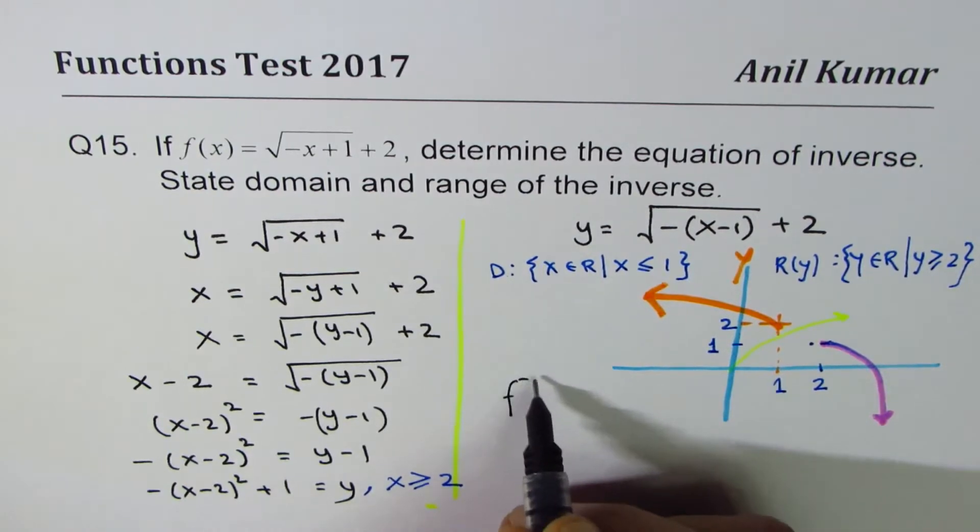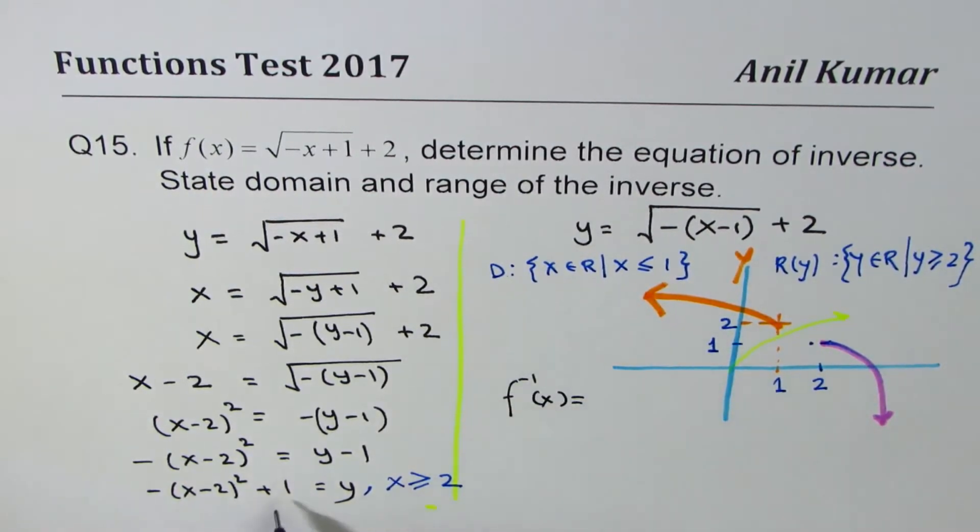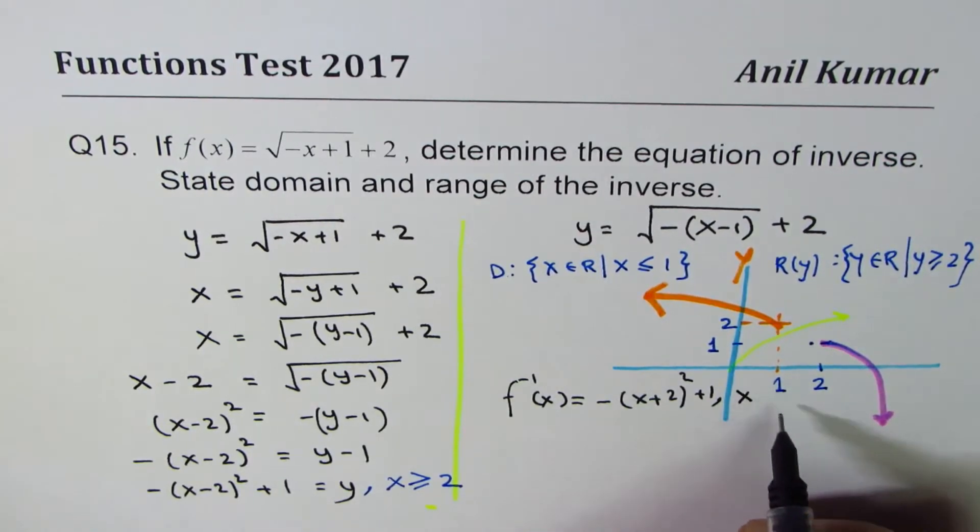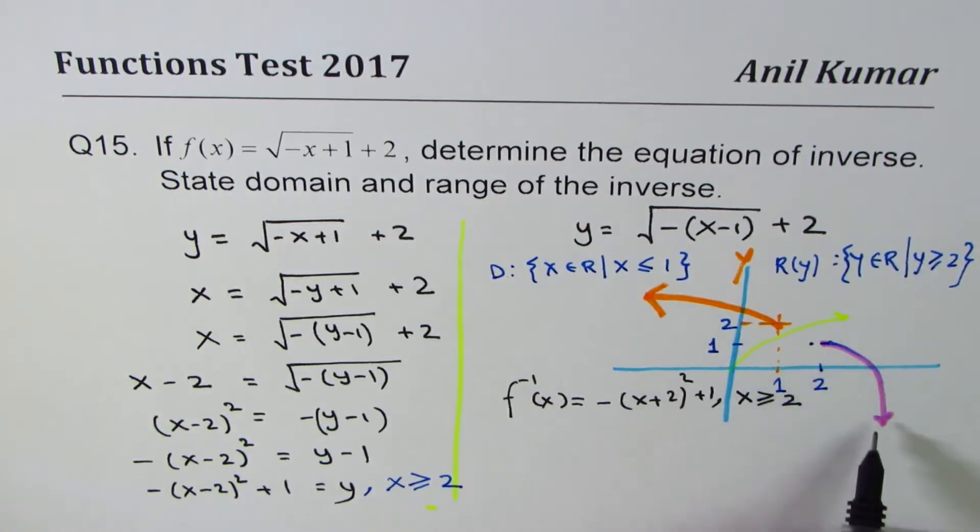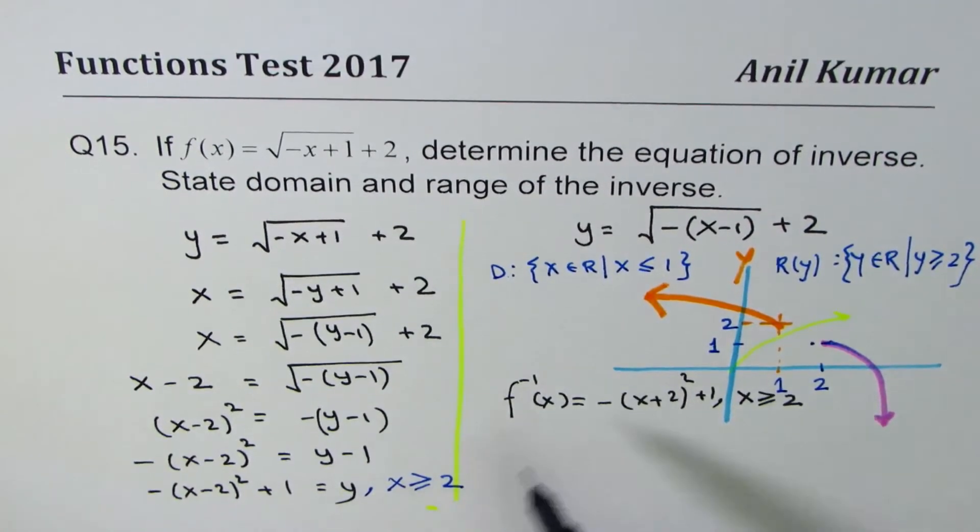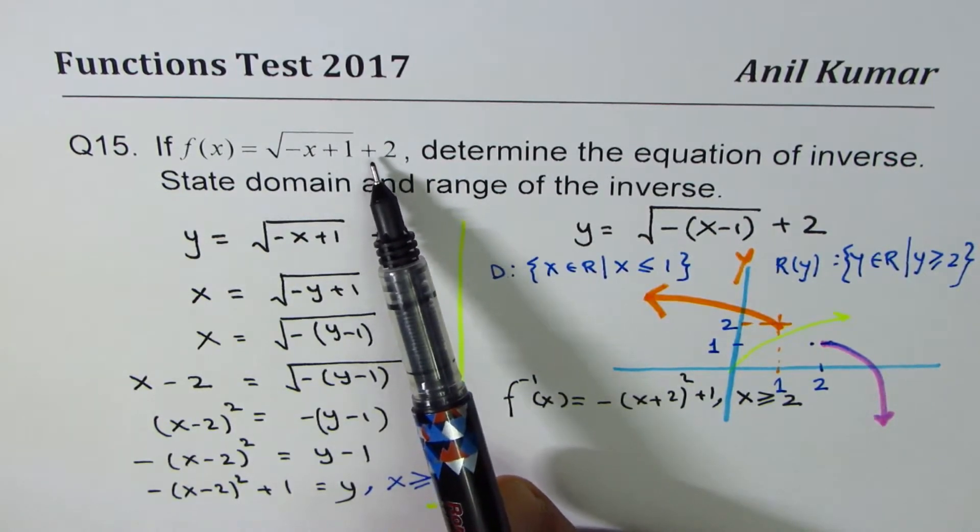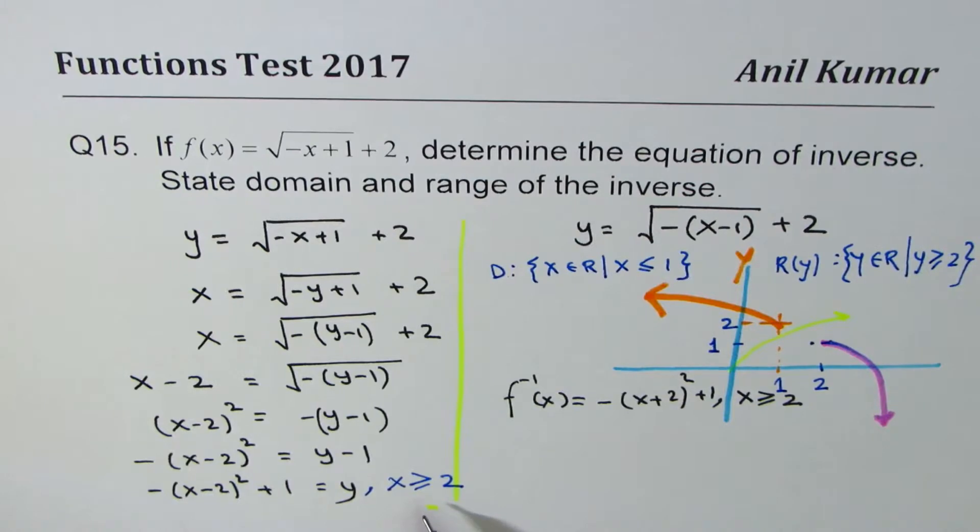We will write here as f inverse of x as equal to minus x minus 2 whole square plus 1, where x is greater than equal to 2. Now, it is very important to write x greater than equal to 2. Otherwise, we have the whole parabola, which is not the inverse of the square root function. This is the inverse of the given function. So the idea here is, when you begin solving this, find the domain and range of the original function. Flip it and write down as domain range of the inverse function.